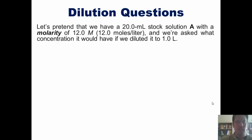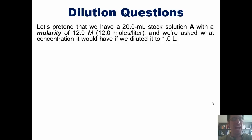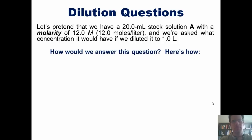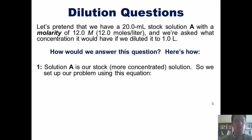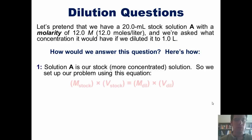Here's another example. Let's pretend that we had a 20 milliliter stock solution A with a molarity of 12 molar, or 12 moles per liter, and we're asked what concentration it would have if we diluted it to 1 liter. We have to remember that solution A is our stock, or more concentrated solution, and we set it up using our reliable equation: M-stock times V-stock equals M-diluted times V-diluted.